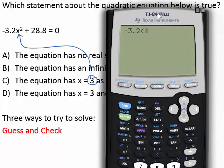So again the negative is below the 3. So negative 3.2 parentheses, since x is equal to 3 we're going to put 3 in parentheses. And then we're going to do an exponent of 2. Press the right arrow key to get out of the exponent. Plus 28.8. Press enter.